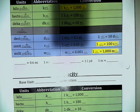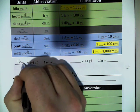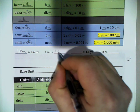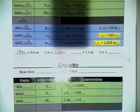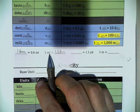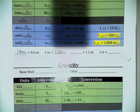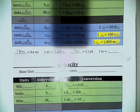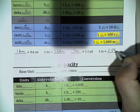One kilometer is approximately 0.6 miles, and one mile is 1.6 kilometers — both are acceptable conversions. You can see that a mile is longer than a kilometer. One meter is approximately 1.1 yards, so if you see a yardstick and a meter stick next to each other, the meter is just a little bit longer. And one inch is approximately 2.54 centimeters.